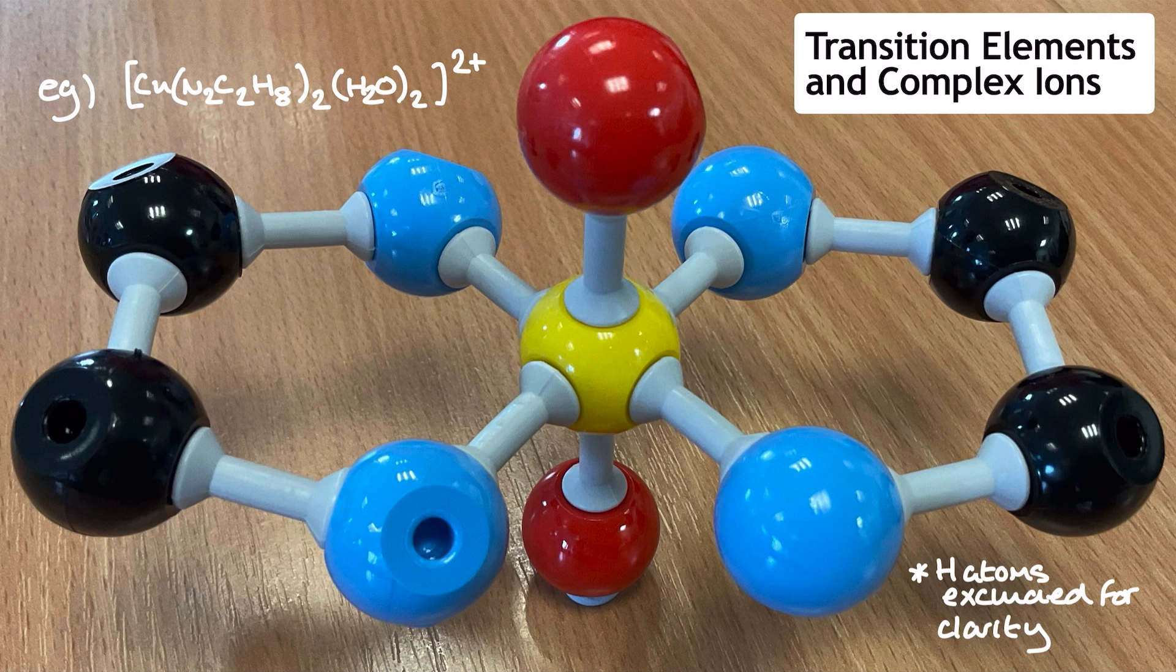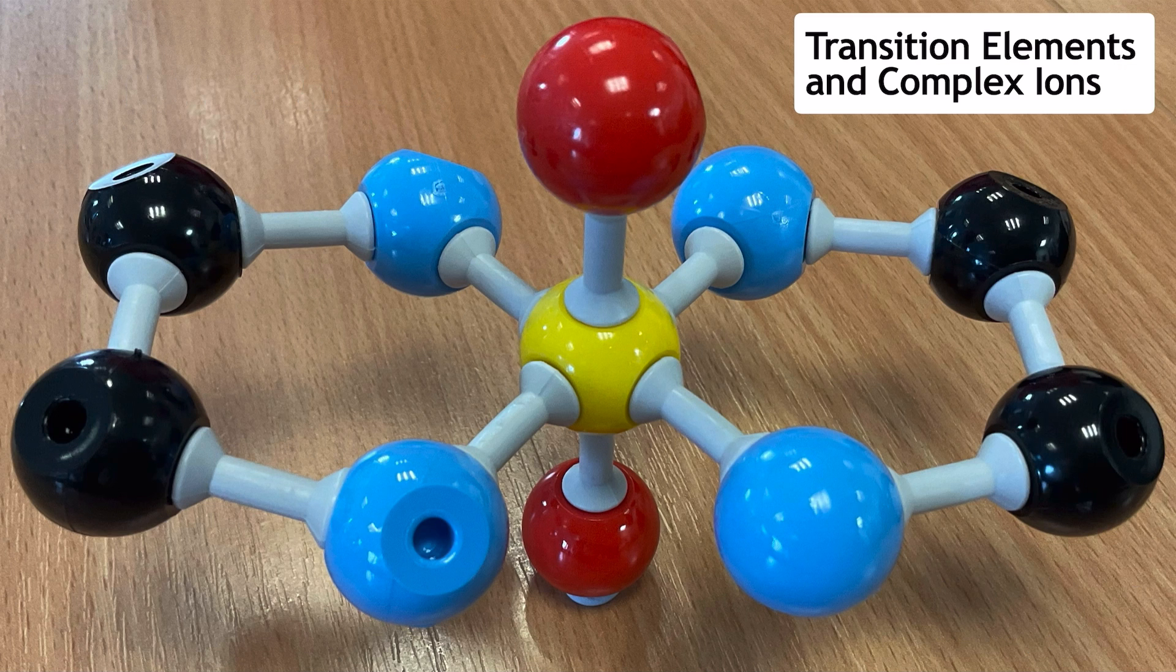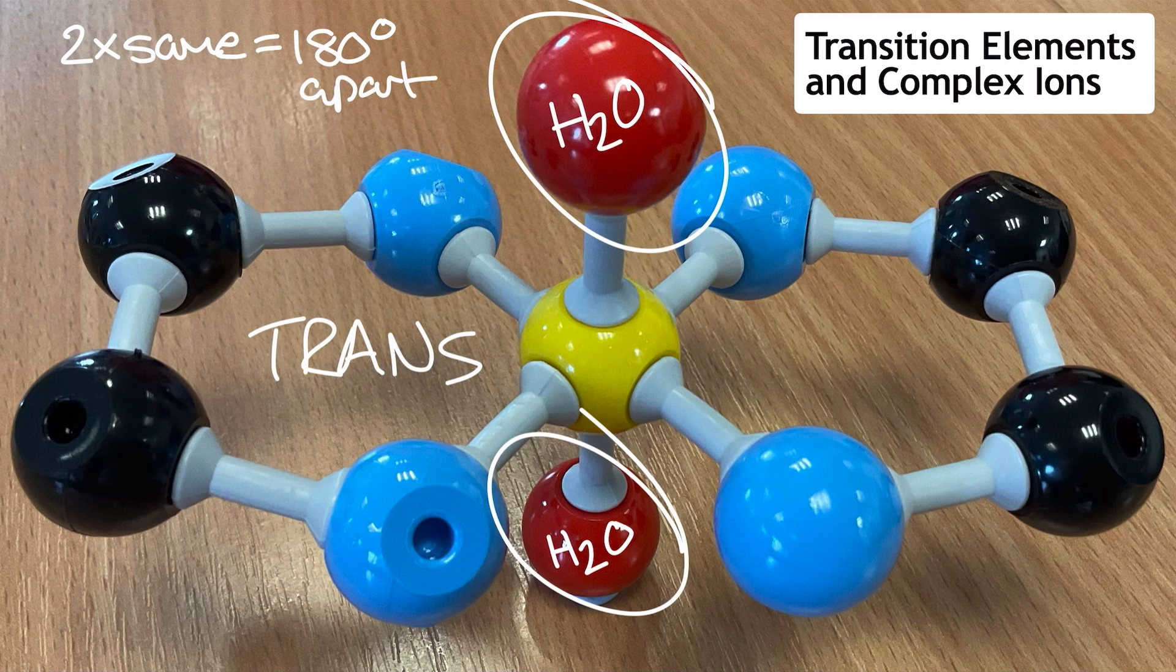Now, the way that I've chosen to position the two water ligands actually gives this molecule an extra bit of a descriptor. We can describe this molecule as a trans-stereoisomer, because when we've got the ratio of ligands, as we can see here, two bidentate of one type and two monodentate of a different, here we can see trans is used as a descriptor to describe the positioning of the two water ligands.